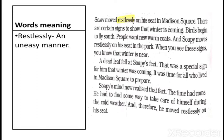Soapy moved restlessly on his seat in Madison Square. There are certain signs to show that winter is coming: birds begin to fly south, people want new warm coats, and Soapy moves restlessly on his seat in the park. When you see these signs, you know that winter is near. The scene is of the onset of winter season. Birds begin to fly towards the south from the north, and people are getting new warm coats.